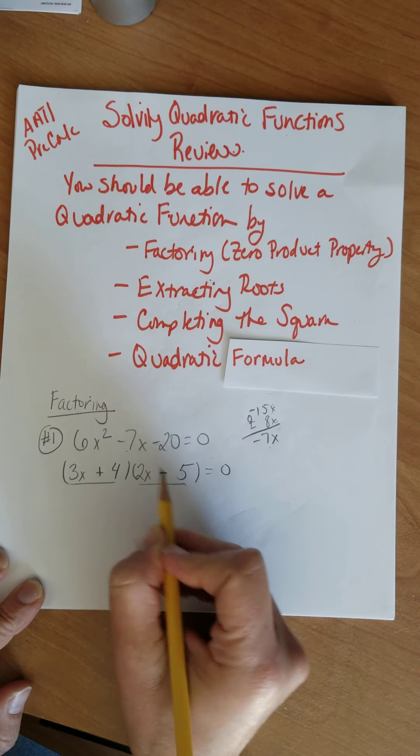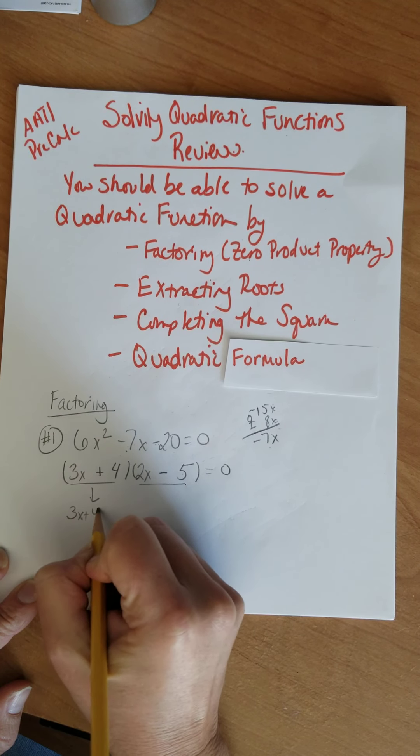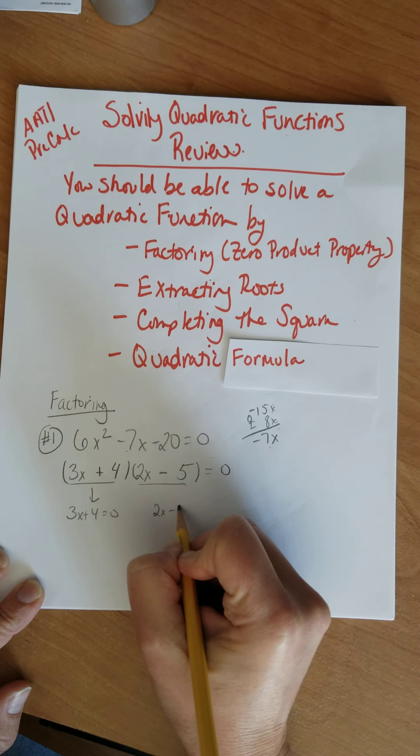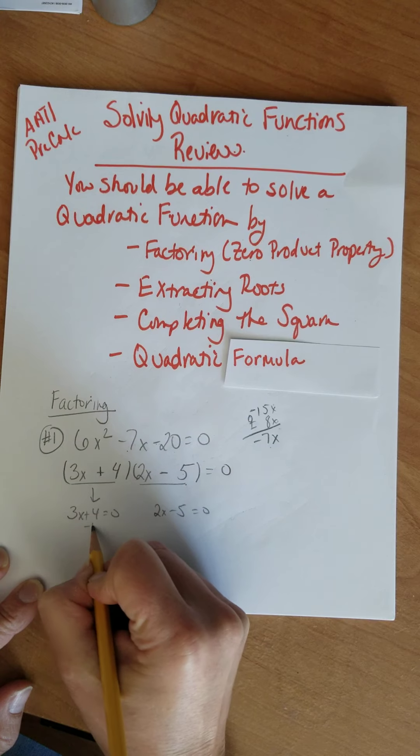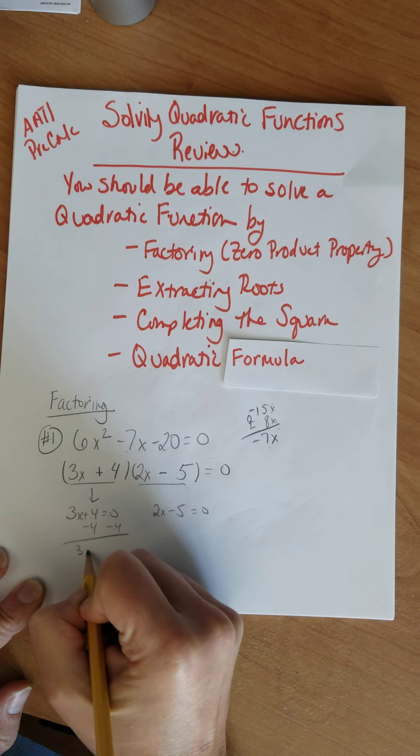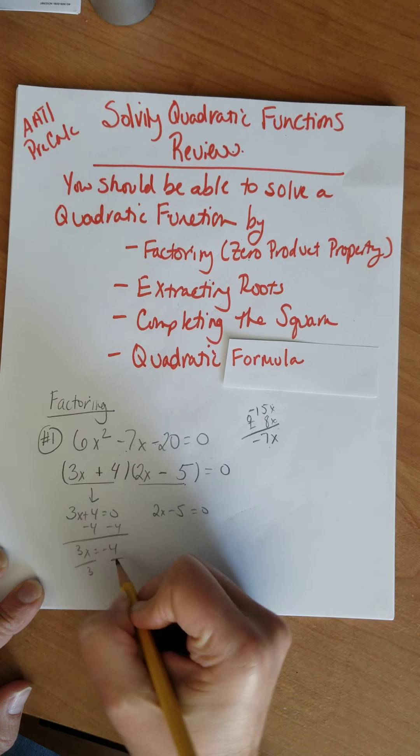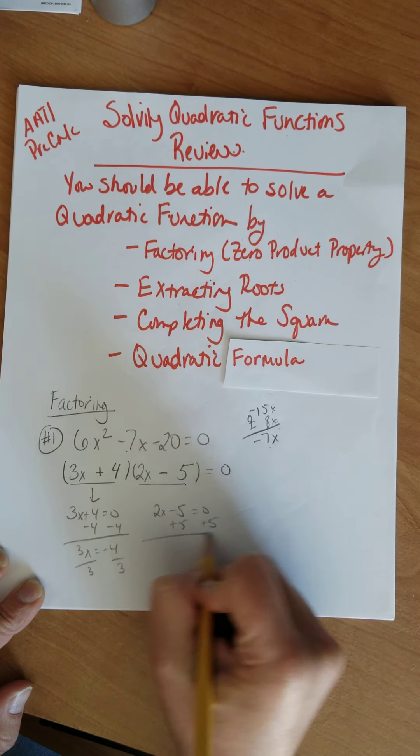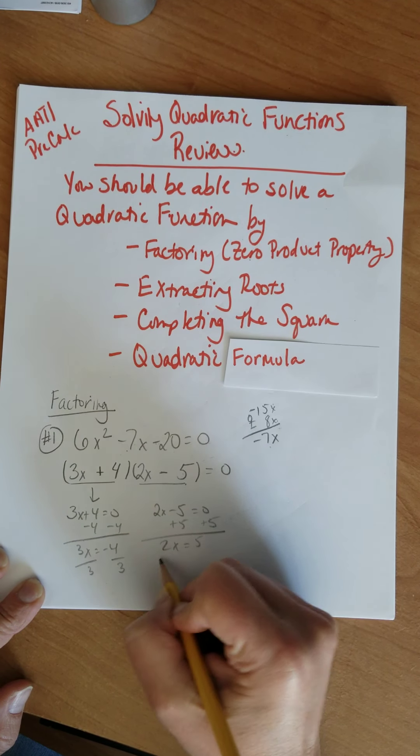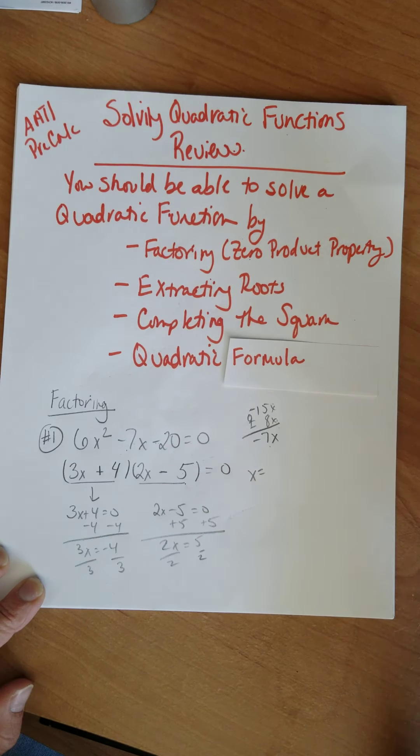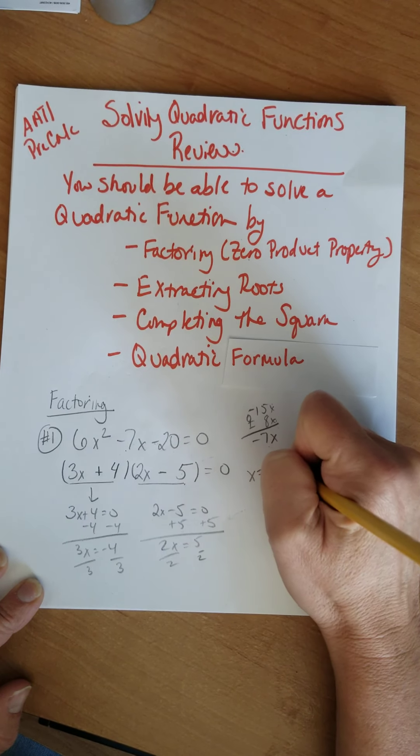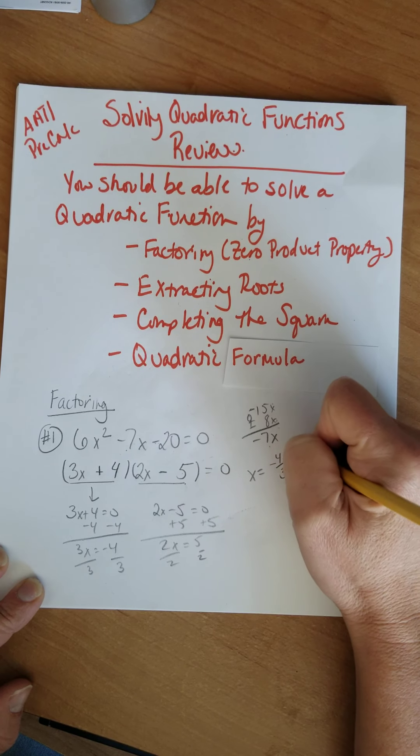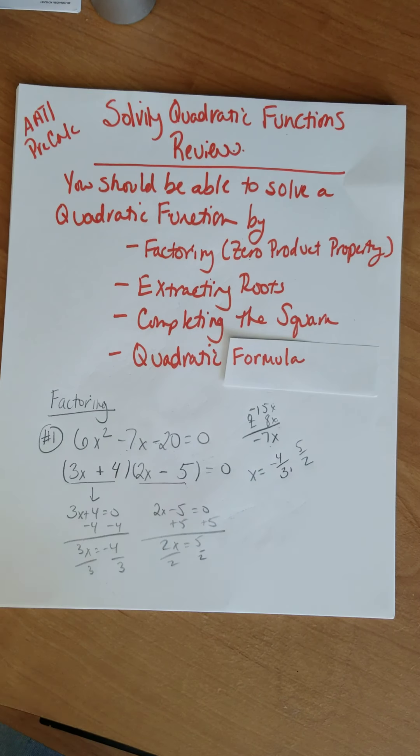I'm going to set each factor equal to zero. Some of you might not need to do this step. Solve for x. Subtract 4 and divide by 3. Negative 4 thirds and add 5 and divide by 2. So x is going to be equal to negative 4 thirds and positive 5 halves.